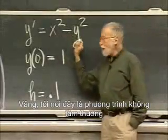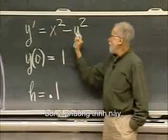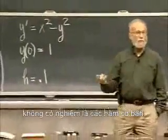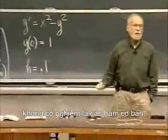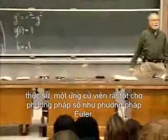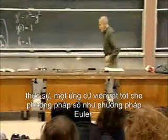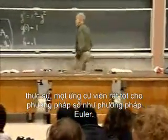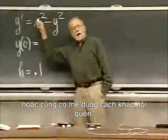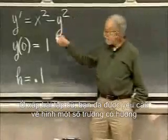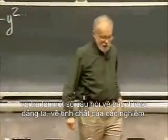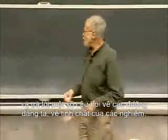This is a non-trivial equation because this equation, as far as I know, cannot be solved in terms of elementary functions. So this equation would, in fact, be a very good candidate for a numerical method like Euler's. On your problem set, you drew a picture of the direction field and answered some questions about the isoclines and how the solutions behave.